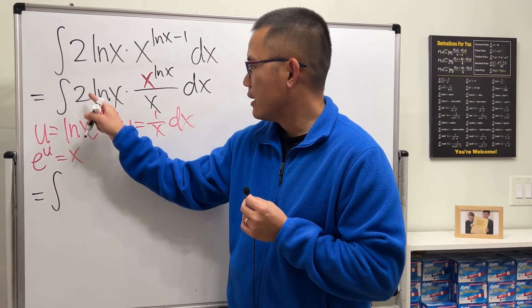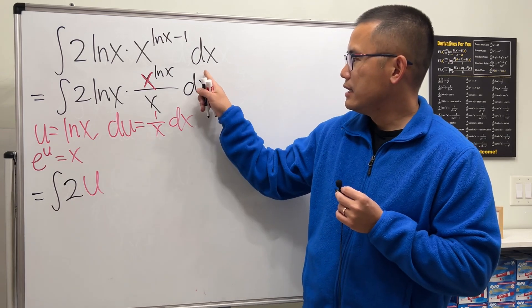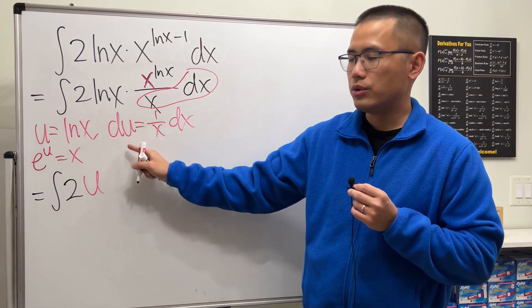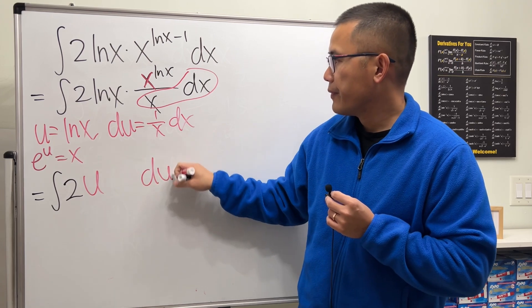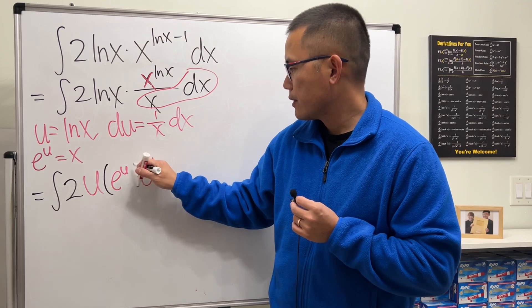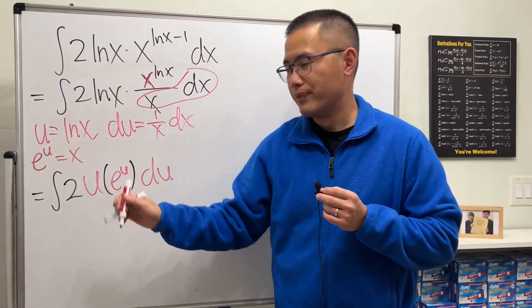Now we will have the integral two states: lnx is our u, and then this portion here is our du. x is e to the u, but this is raised to the lnx power, which is the u again.